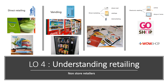The fourth type of non-store retailer is electronic retailing, which uses electronic devices like computers and mobile phones. This includes online retailing where you buy directly through apps like Shopee, Lazada, or Zalora — not just websites but also mobile apps. There is also TV retailing, where a TV channel demonstrates products and allows you to order after watching the program — examples include CJ Wow Shop and Go Shop.